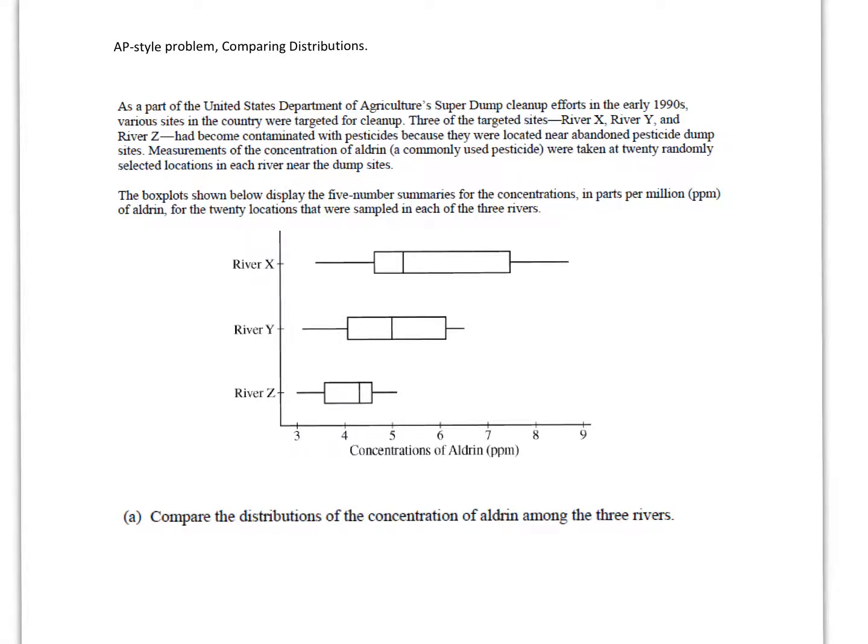Hey you guys, we got our very first AP style problem to talk about and kind of go through together here on this video today. I know you're fully capable of reading these words up here, this little story about these three different rivers, but the short story is that they've taken these three rivers and they took 20 different locations at each of the three rivers and took water samples and they're measuring the concentration of aldrin. So aldrin is a pesticide. They're trying to figure out how highly concentrated the pesticide is in each of these rivers by testing 20 different places in each river.